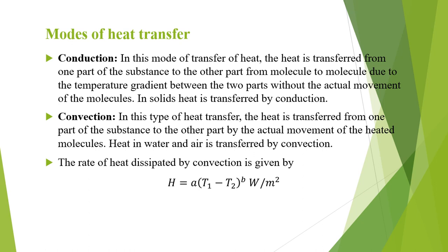Convection: in this type of heat transfer, heat is transferred from one part of the substance to the other part by actual movement of the heated molecules. Heat in water and air is transferred by convection. The rate of heat dissipated by convection is given by H = A × (T1 − T2)^B watts per square meter, where A and B are constants whose value depends upon the type of heating surface, and T1 and T2 are the temperatures of the heating surface and fluid in degrees Celsius.